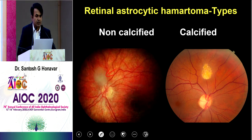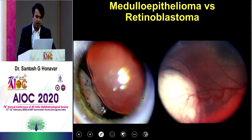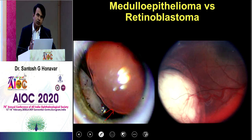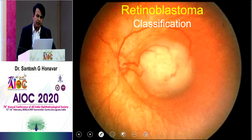Retinal astrocytic hamartoma can be of two types: non-calcified, sitting on the retina like a button obscuring blood vessels; or calcified, which can sometimes simulate retinoblastoma. Look for systemic manifestations such as neurofibromatosis and tuberous sclerosis — if the child has those, suspicion for astrocytic hamartoma is much higher. Medulloepthelioma presents as a peripheral tumor with loss of zonules, leading to a lens coloboma or zonular coloboma — it's a ciliary body tumor, not a retinal tumor, and that's how you differentiate it from retinoblastoma.